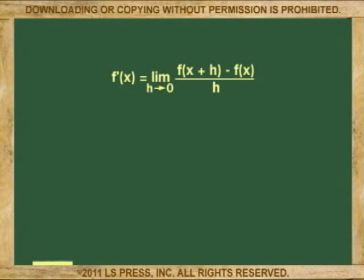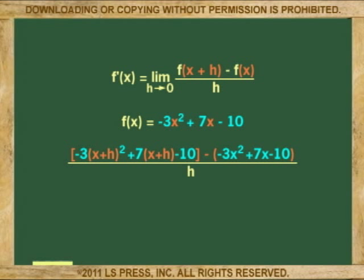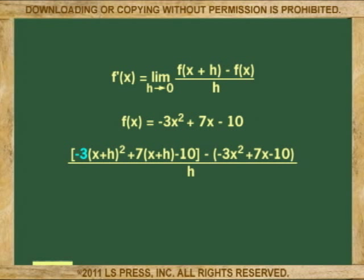Again, using the equation for the derivative f prime of x, when the limit of h approaches 0, f of x plus h minus f of x over h, we substitute our parabola equation into it. Notice that every x in the equation gets the x plus h treatment and we get negative 3 times x plus h squared plus 7 times x plus h minus 10.